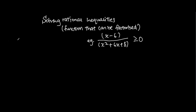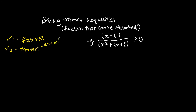How do we solve these rational inequalities? There are a few main steps. The first step is to factorize the function itself. This is followed by doing the sign test, which consists of drawing the number line and determining the roots, as well as determining which portions are positive or negative. And last but not least, we find the solution.